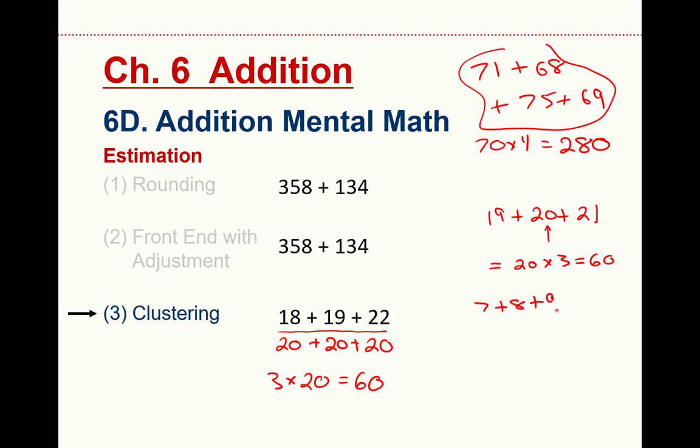This comes up occasionally. 7 plus 8 plus 9. Quick. What's the solution? You should think to yourself, 8 times 3 is 24. It gets a little bit trickier. Let's say I want to add 6 plus 7 plus 8 plus 9. Now what do you do? Well, the number in the middle is 7.5, and I need 7.5 times 4. Well, 7.5 times 2 is 15, and then times 2 again is 30, and you can get your answer that way. So just some fun tricks.